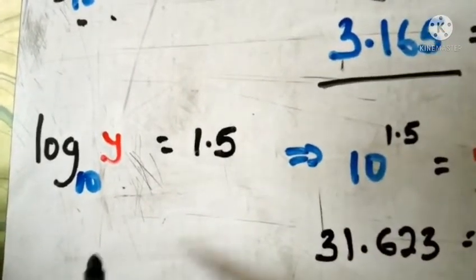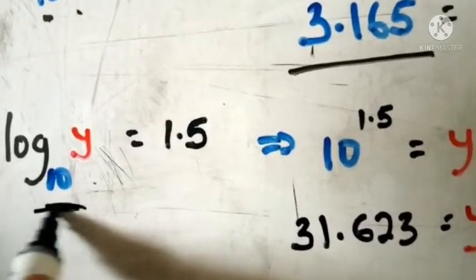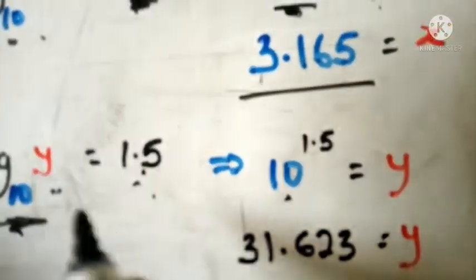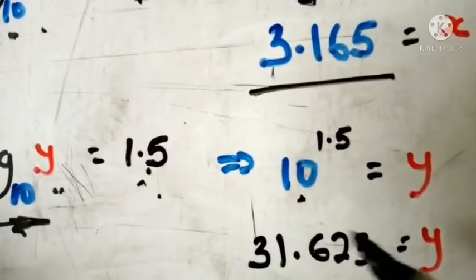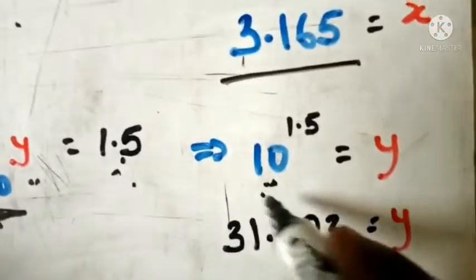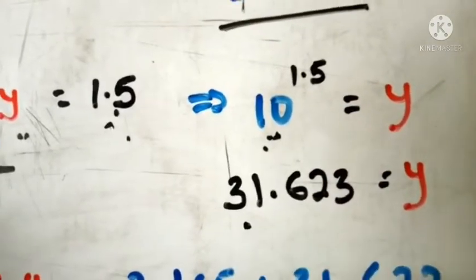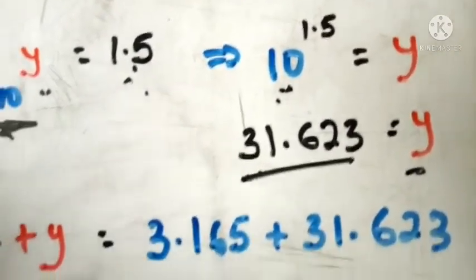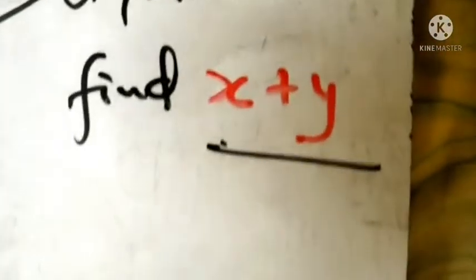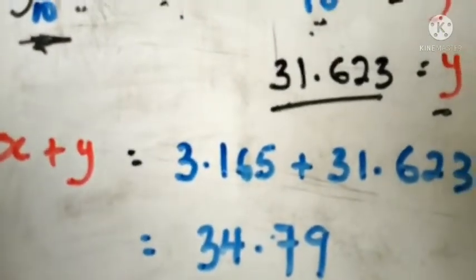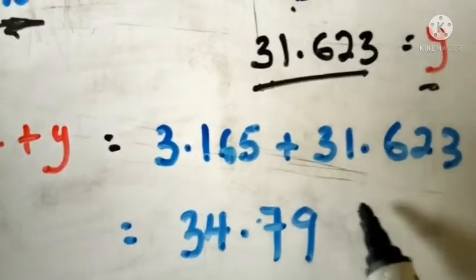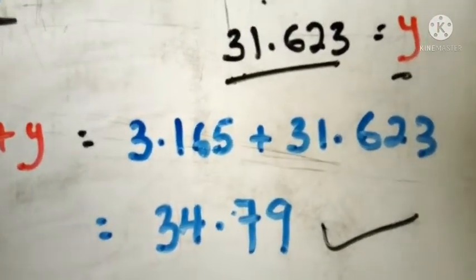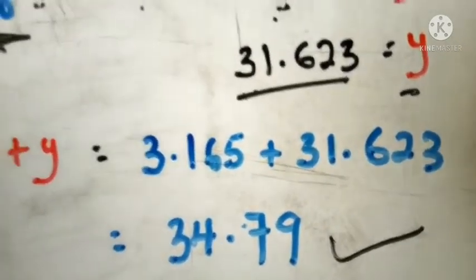For y: pause the video and try it yourself. Log of y base 10 equals 1.5 means 10 raised to the power 1.5 equals y. The base is 10, the exponent is 1.5, and the answer is y. With the help of a calculator, 10^1.5 gives approximately 31.623, so y equals 31.623. Now we know both x and y. They say find x plus y, so we add: 3.162 plus 31.623 gives approximately 34.79. This is how simply you solve this problem by swapping between indices and logarithms.